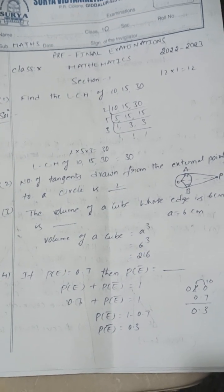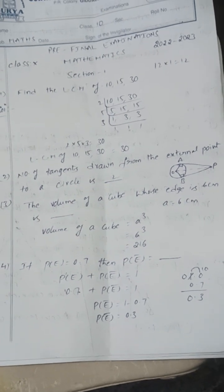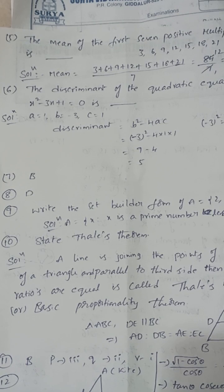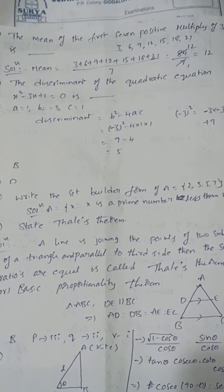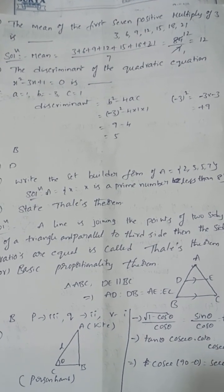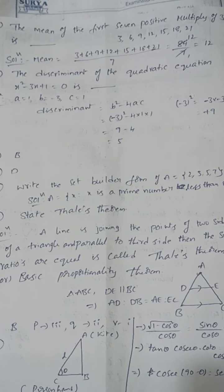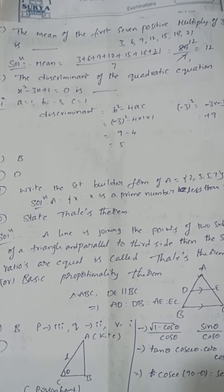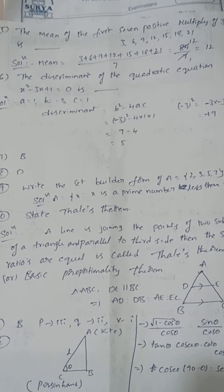If P(A) equals 0.7, then P(A bar) equals 0.3. The mean of the first 7 positive multiples of 3 — that is 3, 6, 9, 12, 15, 18, 21 — mean equals sum of observations by number of observations. The sum is 84, number of observations is 7, so 84 ÷ 7 equals 12.